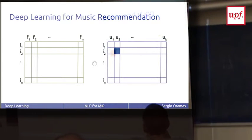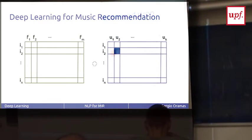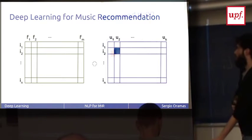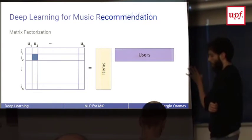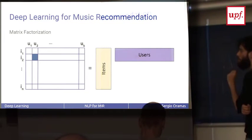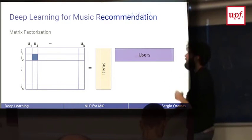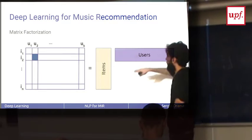Deep learning for music recommendation. This is the last thing I was working on. I was at Pandora doing an internship doing deep learning for music recommendation. The state of the art in recommendation is to use matrix factorization. You have the user-item matrix and you do factorization and you get two matrices.